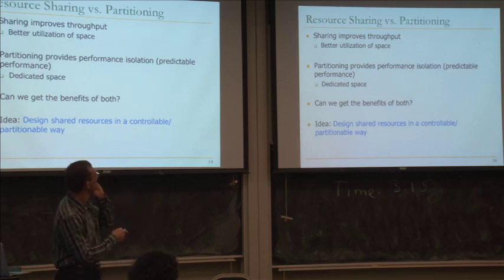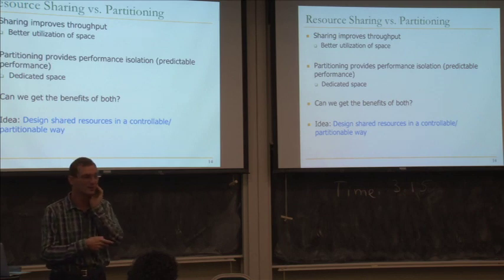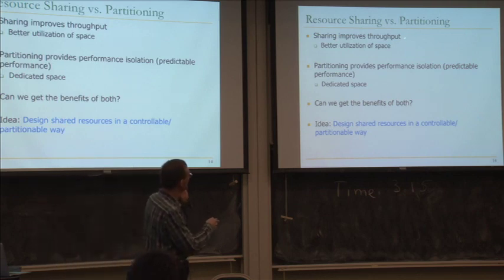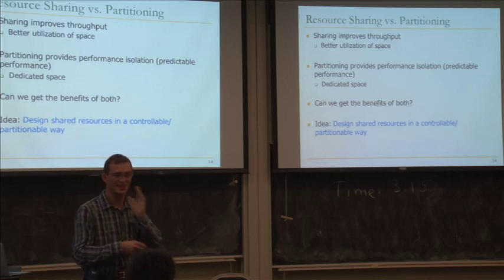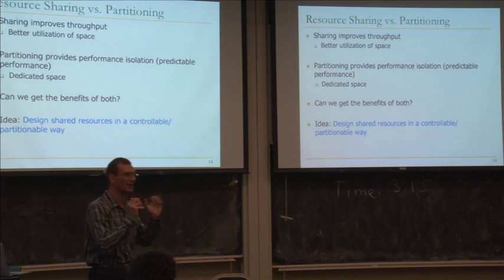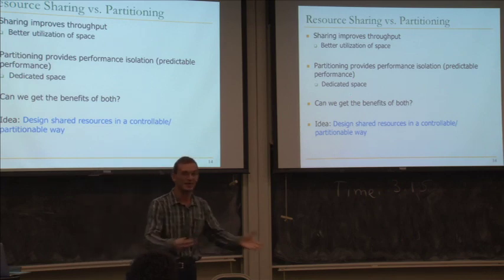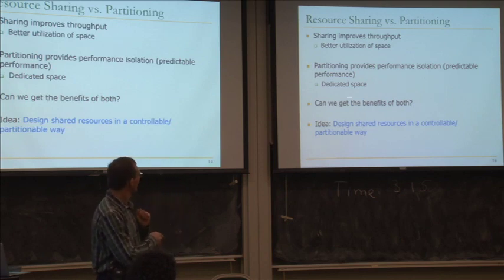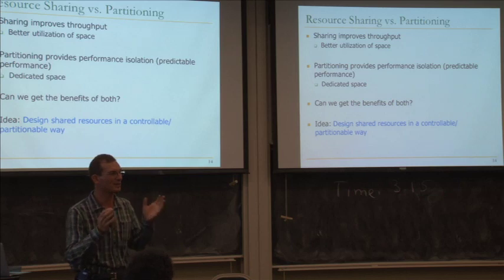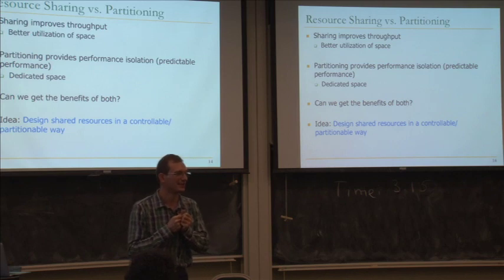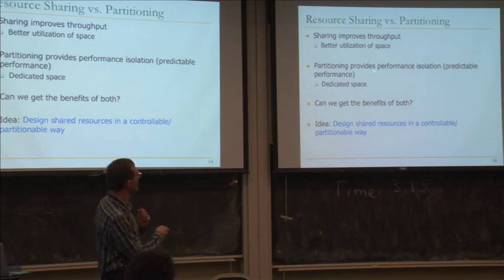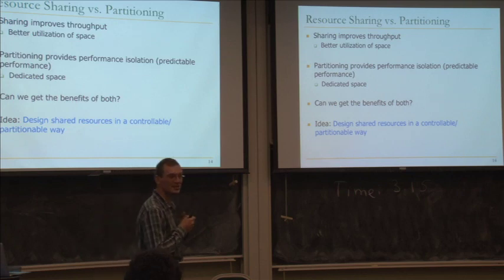There's a trade-off between sharing and partitioning. Sharing improves throughput through better utilization of space or time. Partitioning provides performance isolation: predictable performance because you have dedicated space or bandwidth. The key question is: can we get the benefits of both? One idea is to design shared resources in a controllable, partitionable way - shared but allocated to provide some performance isolation.